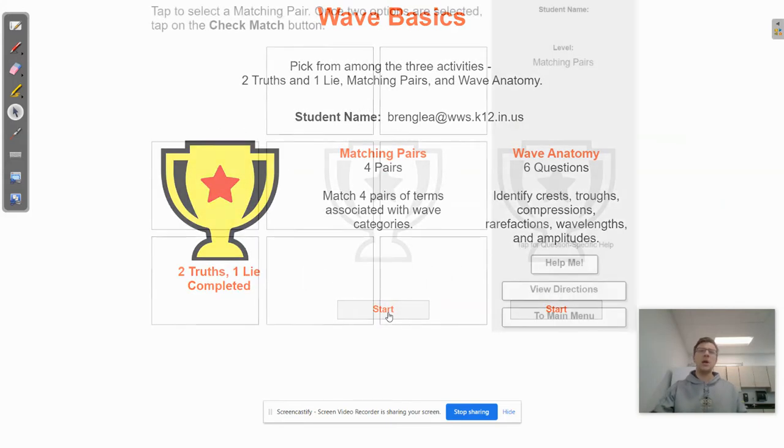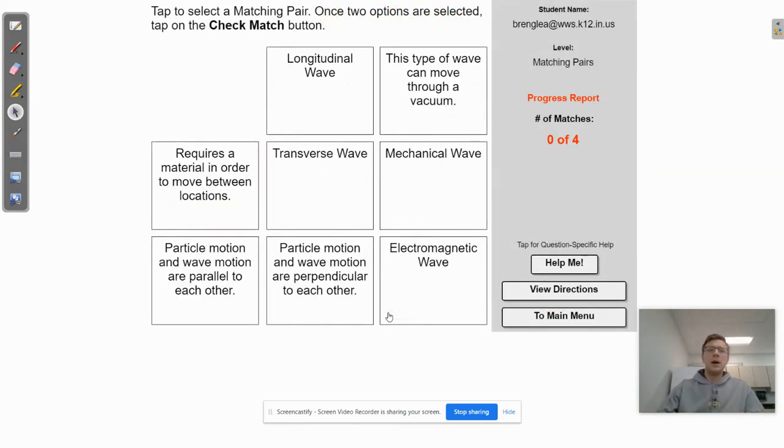All righty here. Matching pairs with the second trophy here. So we're going to match pairs here. So let's start with this one. This type of wave can move through a vacuum. So there's two main categories of waves in terms of how they or what they can move through. A mechanical wave is something that requires a medium to travel through. So there has to be something there. A vacuum is like outer space. There's nothing out there.